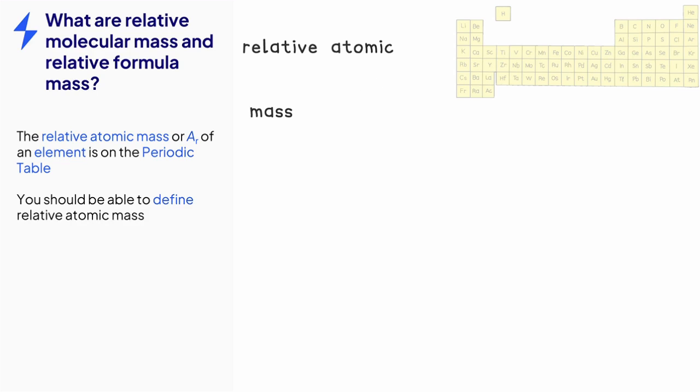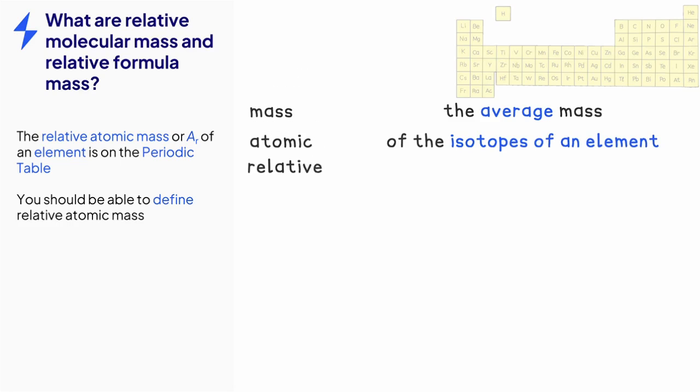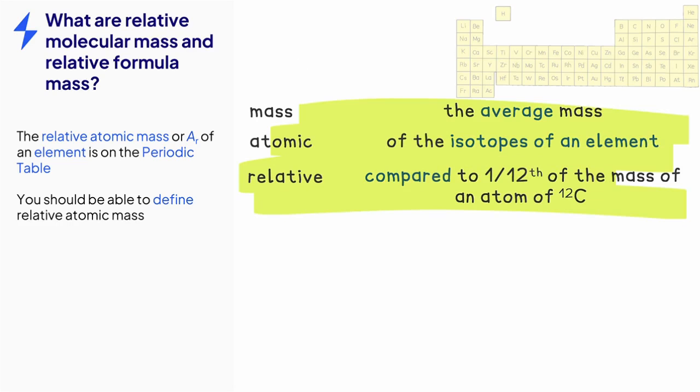Mass, this is the average mass. Atomic actually means of the isotopes of an element. Relative compared to one twelfth of the mass of a carbon-12 atom.